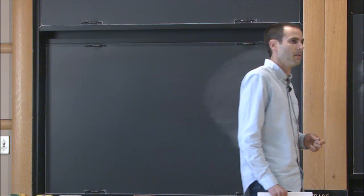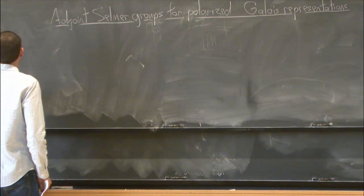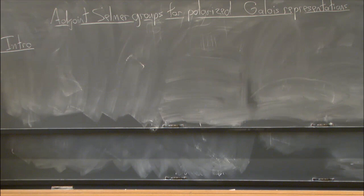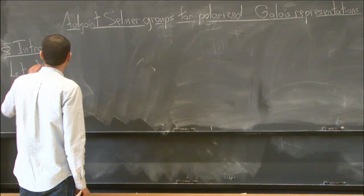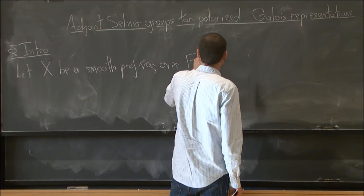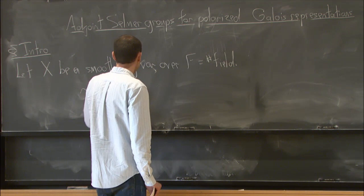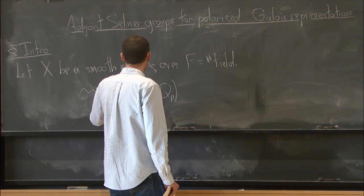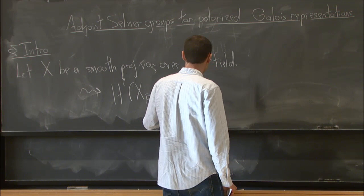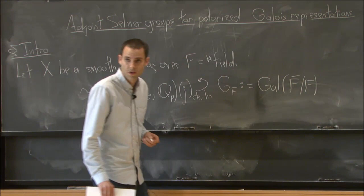Thank you very much for the invitation, and thanks everybody for coming. I want to start off with a bit of intro to set up the problem I'm considering and why it's something we might want to think about. So first, let X be a smooth projective variety over F, which throughout the talk will be a number field. Associated to this, we can take étale cohomology with Q_p coefficients — H^i with a Tate twist. This is a finite dimensional vector space with a continuous linear action of G_F, which will be my notation for Gal(F-bar over F), with F-bar an algebraic closure.